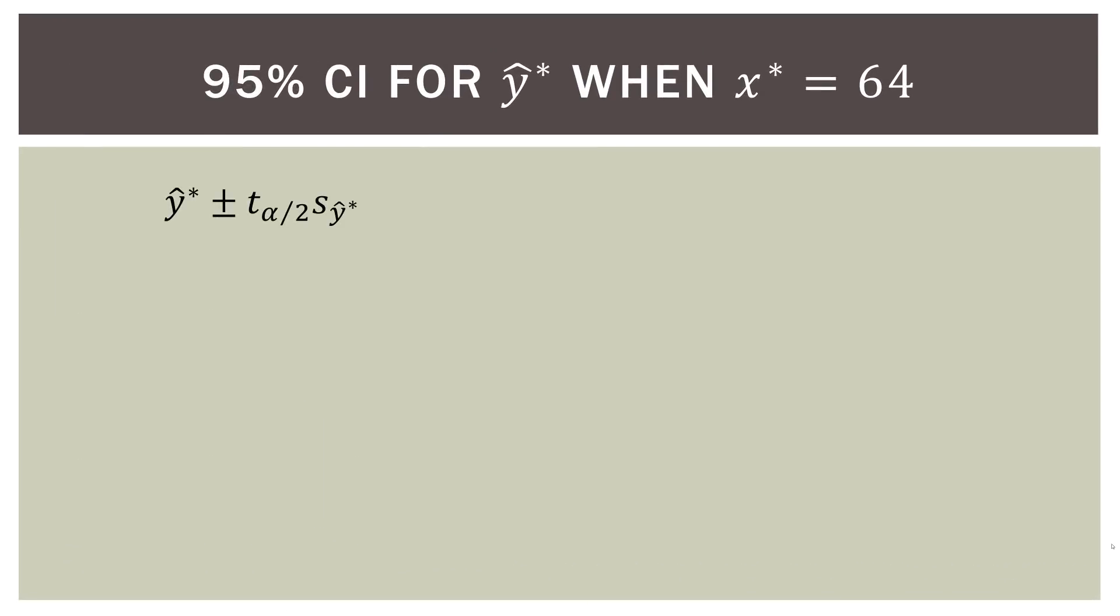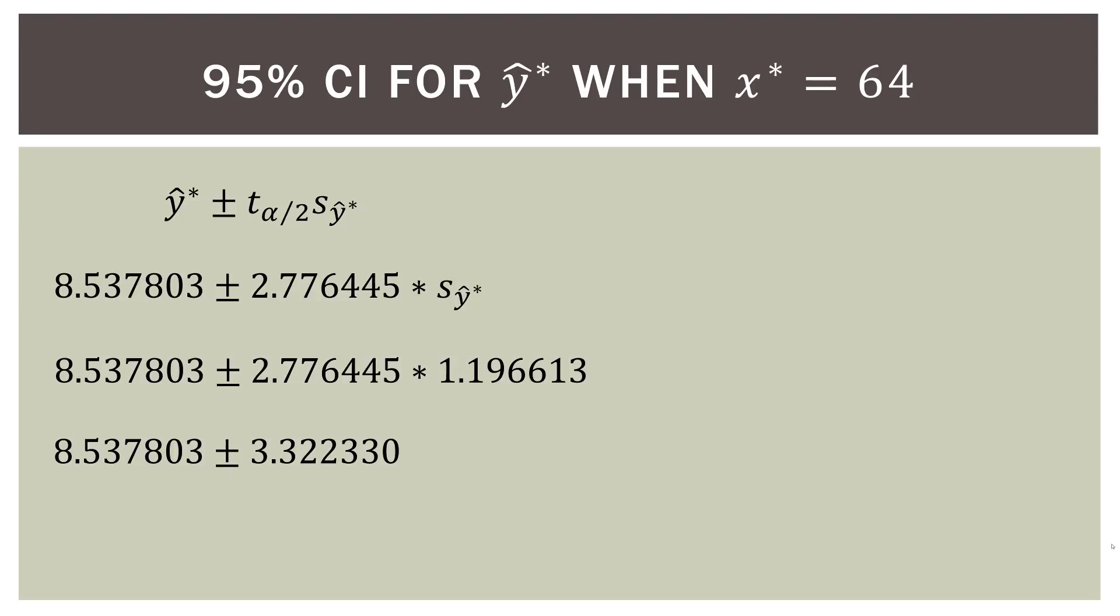So there is our confidence interval. We go ahead and substitute everything in. So that we know already. Now we go ahead and substitute in what we just found, which is 1.196613. Go ahead and do, again, some simple math. So this is our confidence interval. 8.537 and change plus or minus 3.32 and some change. So we're going to get an interval. And here's our interval. So 5.2154 to 11.86.